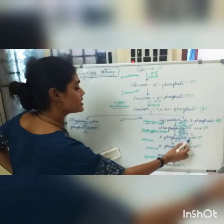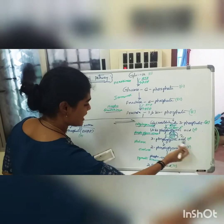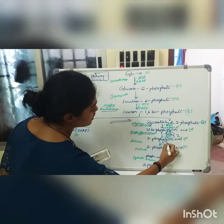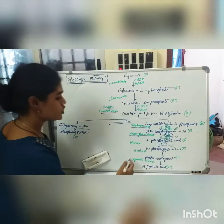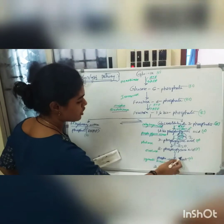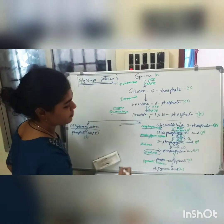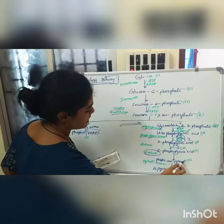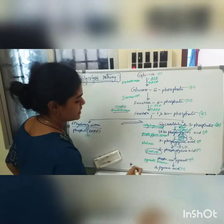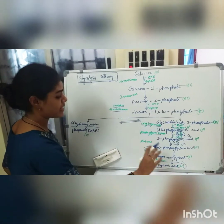3-phosphoglycerate is converted into 2-phosphoglycerate in the presence of mutase enzyme. Then, 2-phosphoglycerate is converted into phosphoenolpyruvic acid in the presence of pyruvate kinase enzyme. This is the end product of glycolysis.